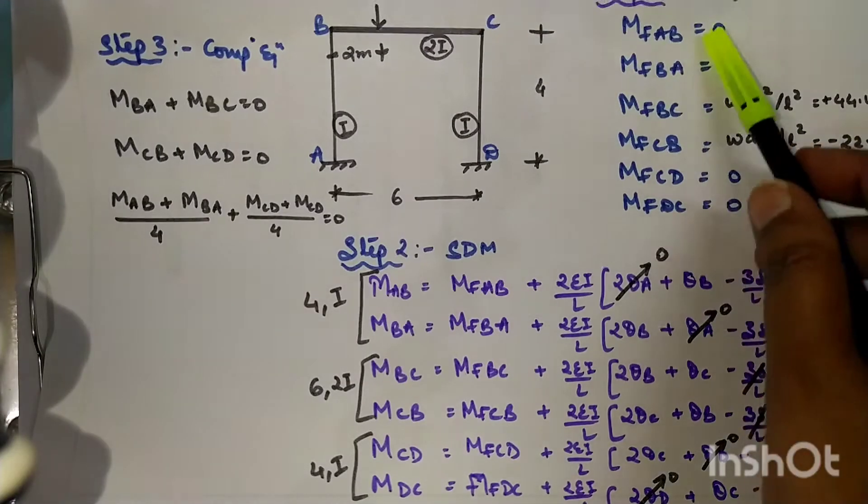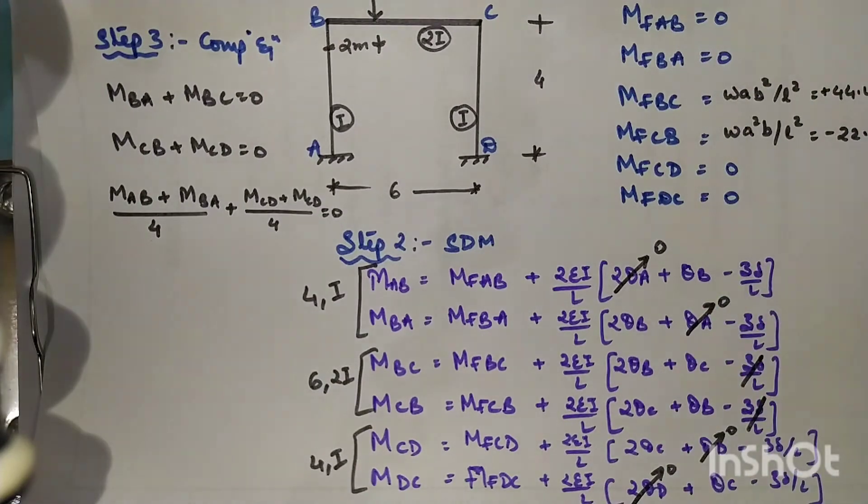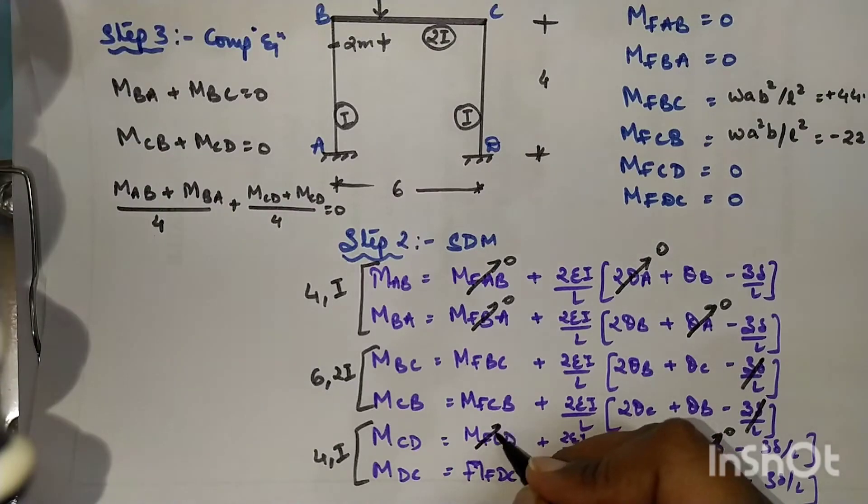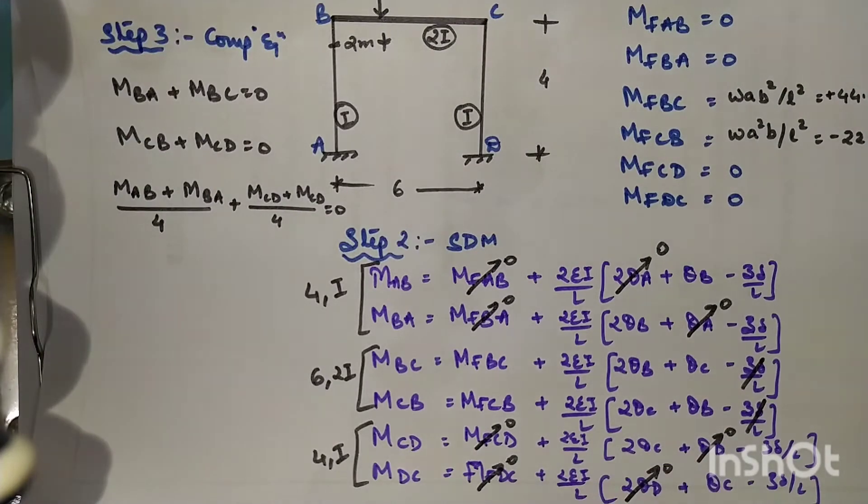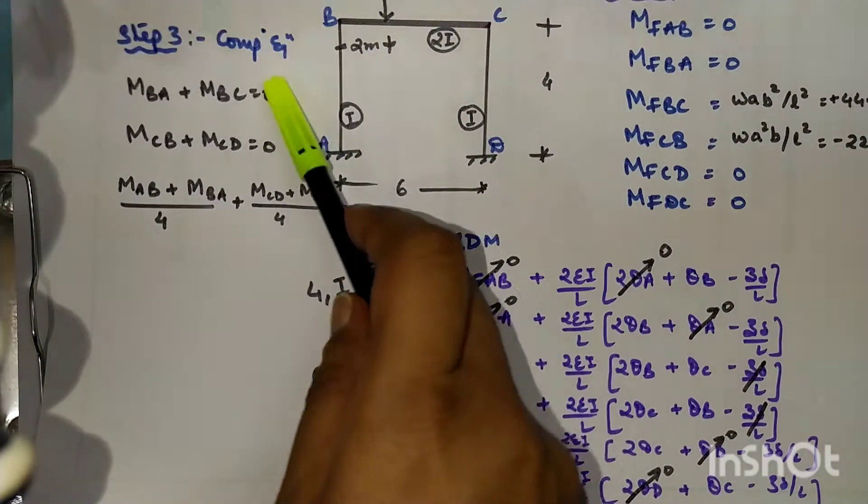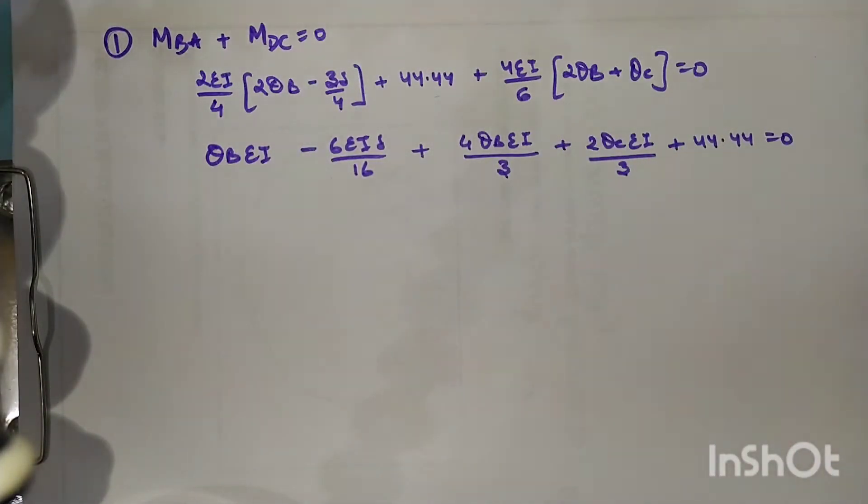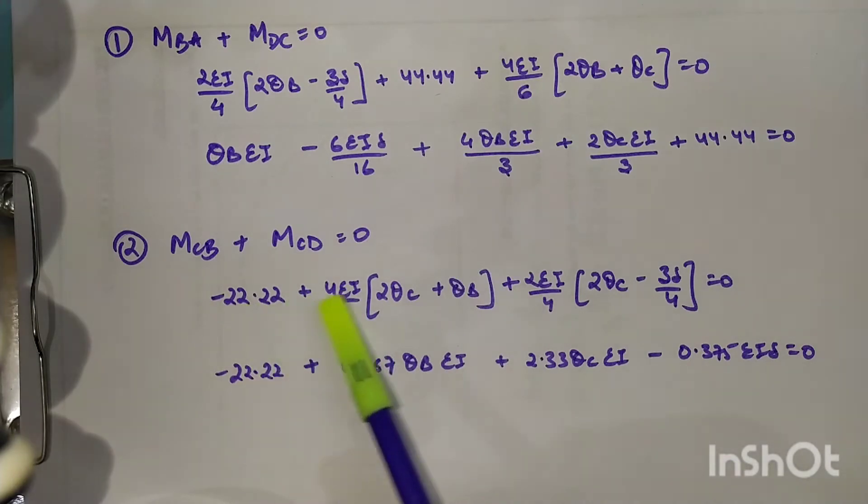Next we will be substituting the value of fixed end moments in the slope deflection equation. Then we will be substituting this slope deflection equation in the compatibility equation, like MBA plus MBC is equal to zero. We have simply substituted the equations.